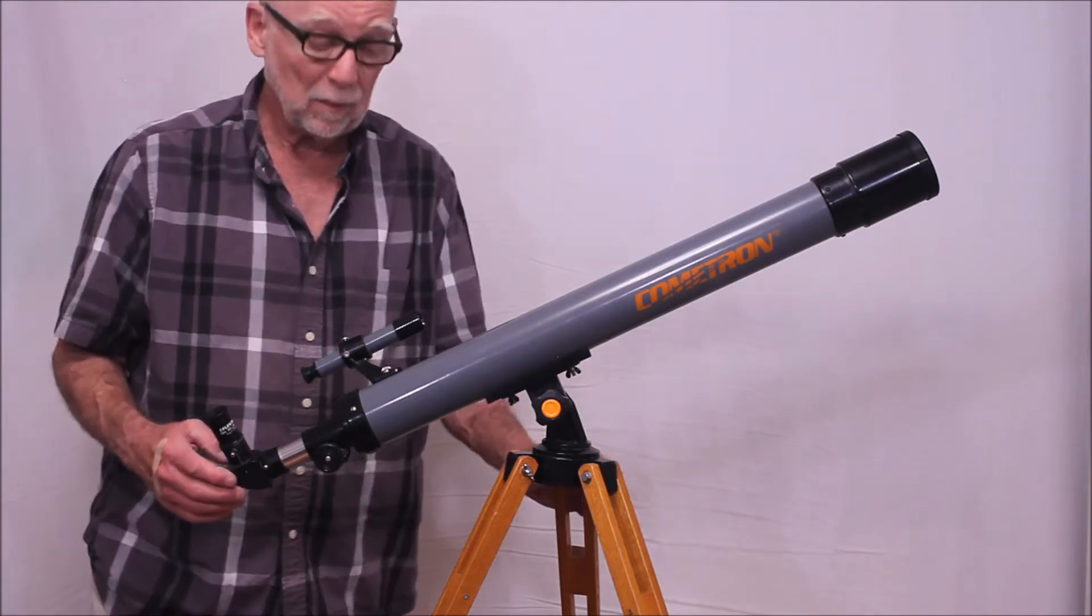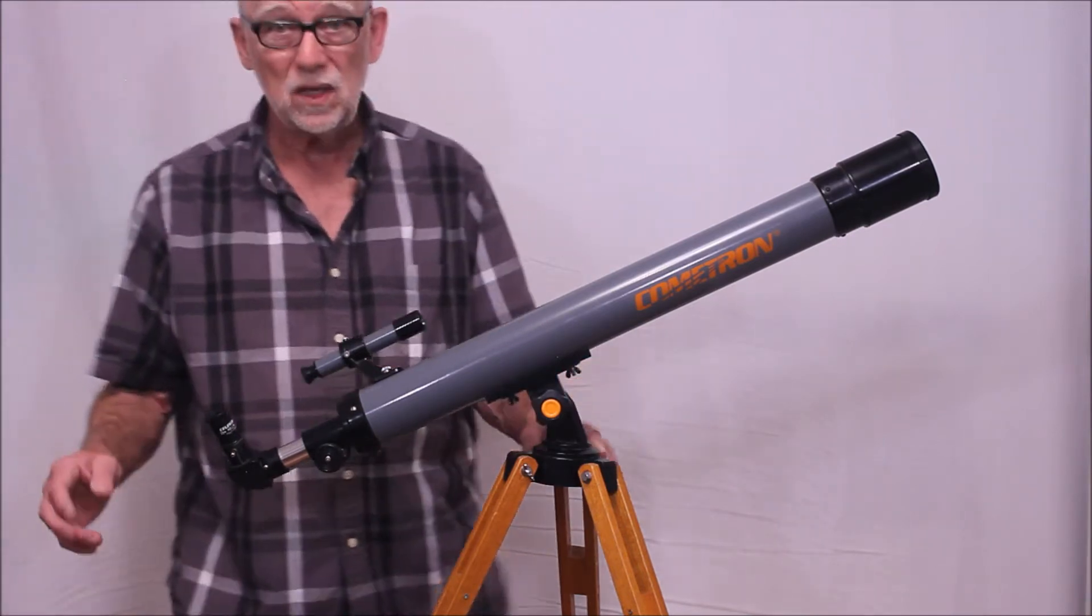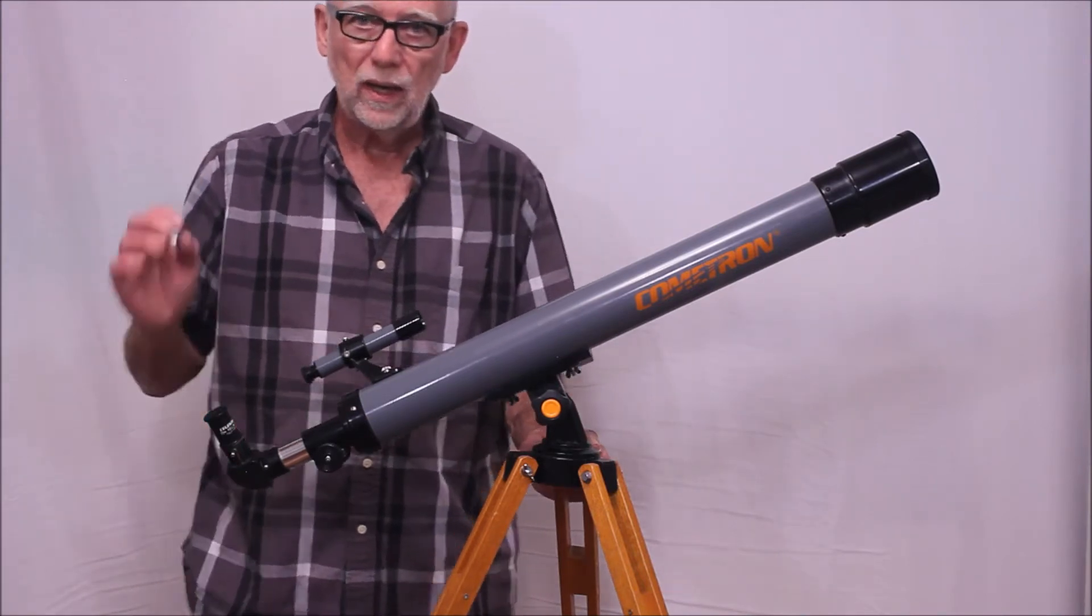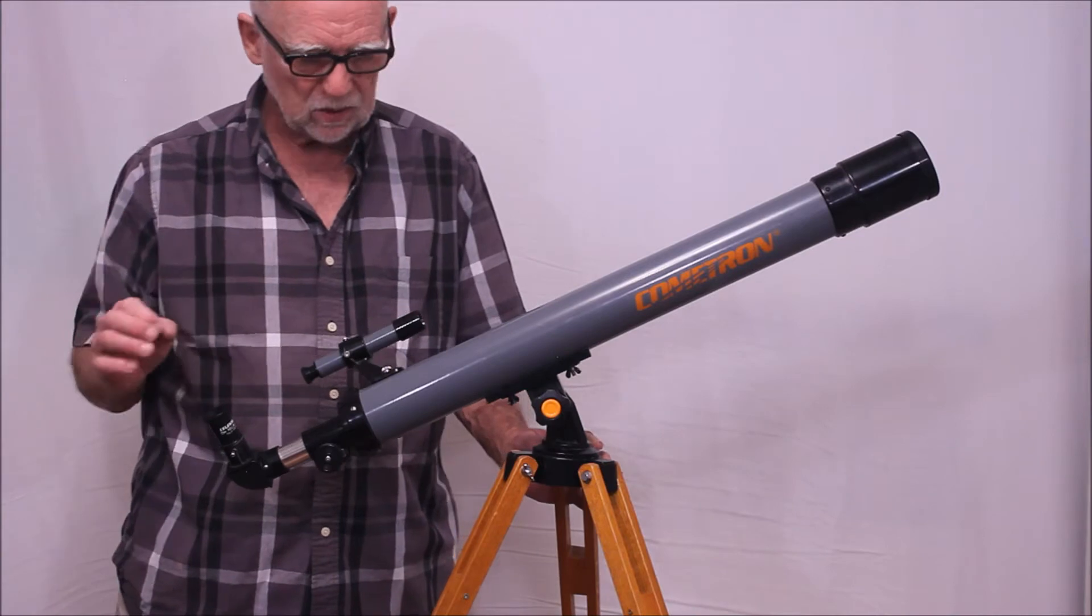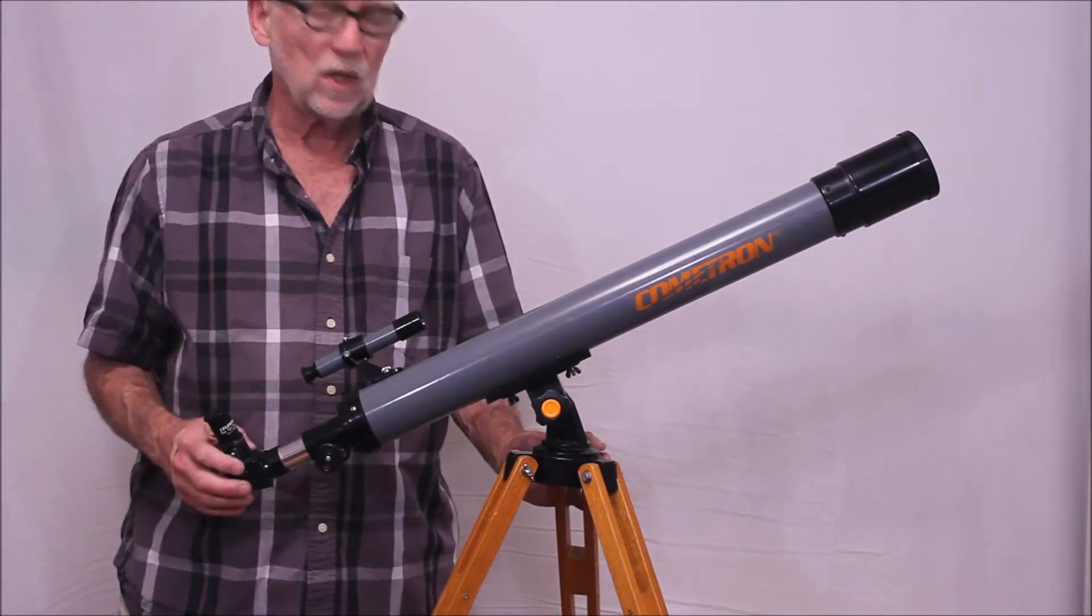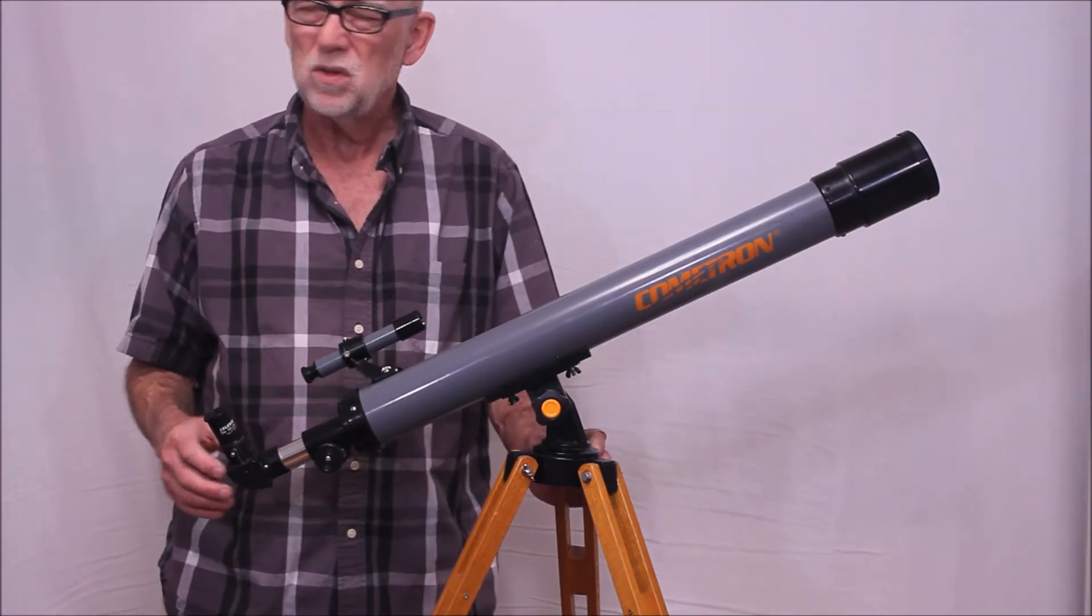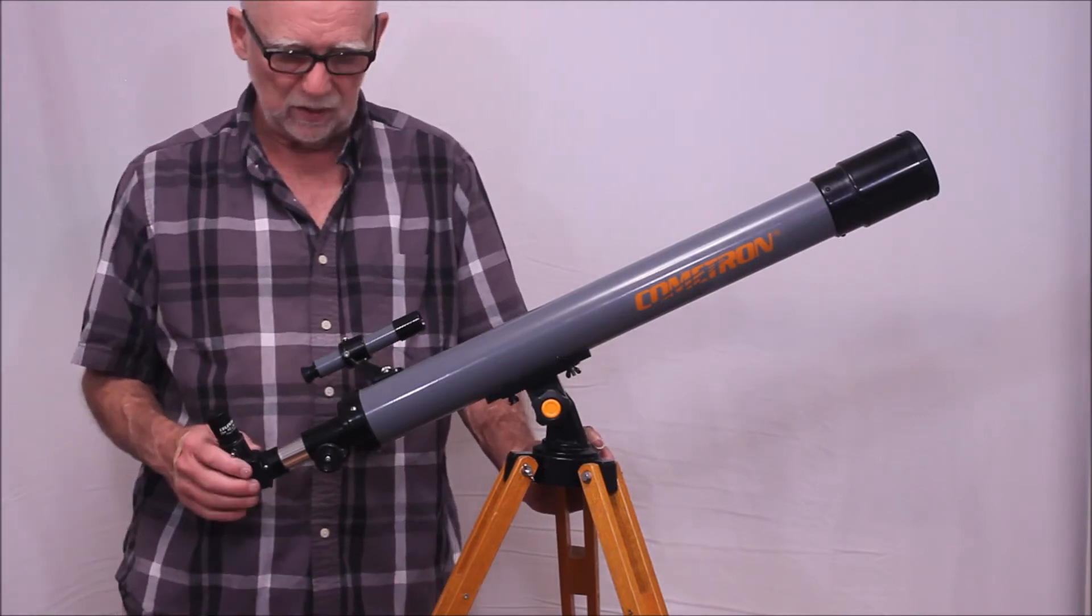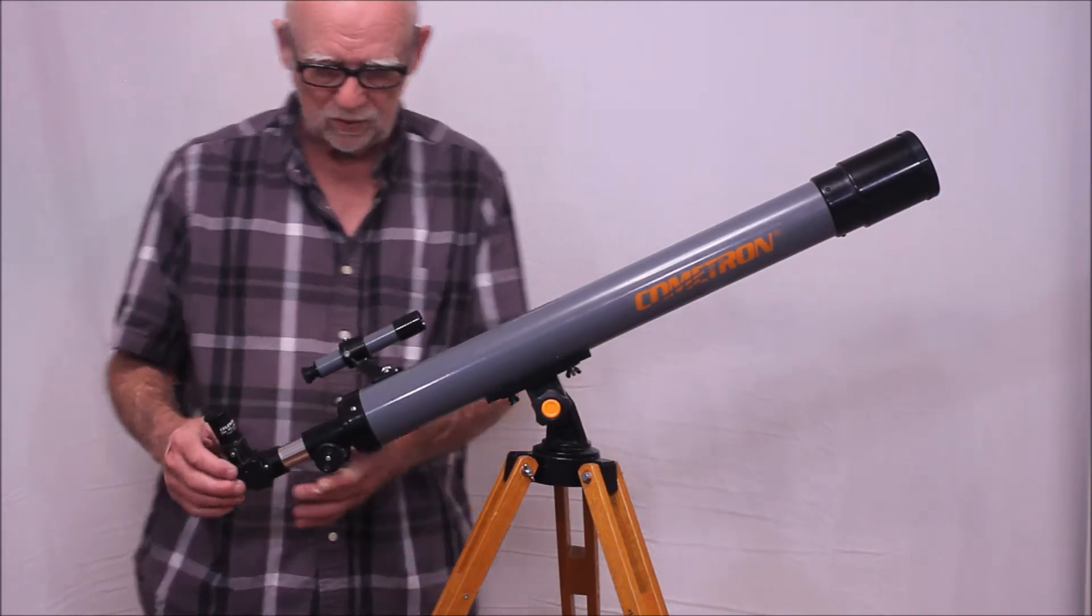Now, the optics on this scope surprised me and shocked me because they're superb. This thing has a wonderful air-spaced achromat. It's beautiful. I was able to use it at 120 power. The seeing was good, and I was able to resolve very nice detail on the surface of Jupiter with this little scope.